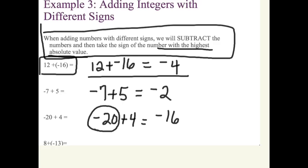8 plus a negative 13. Answer is going to be negative here again. Didn't realize I made all the answers negative when I did this. Answer is going to be negative. I'm going to subtract 13 minus 8 and my answer would be a negative 5.